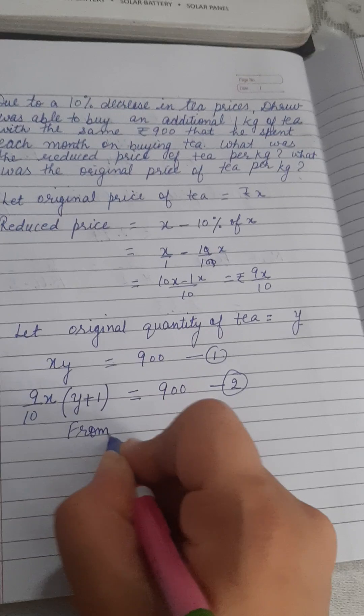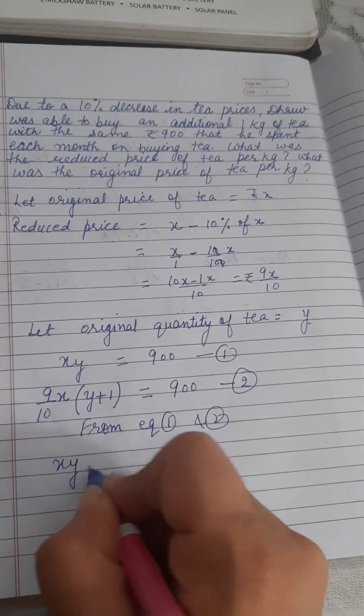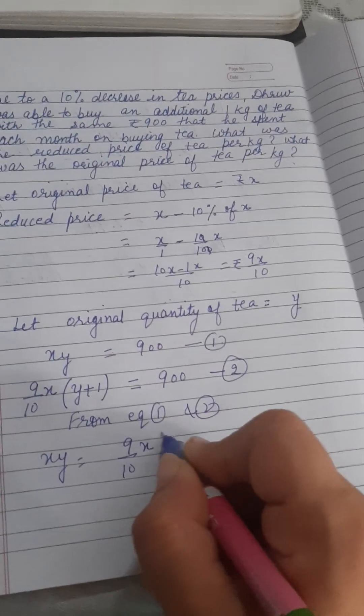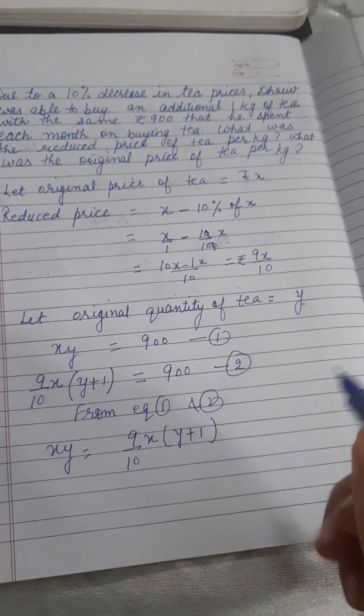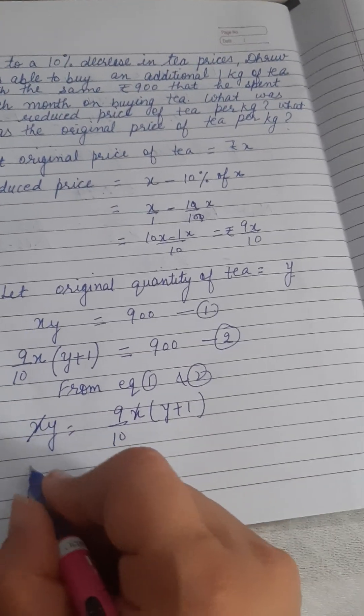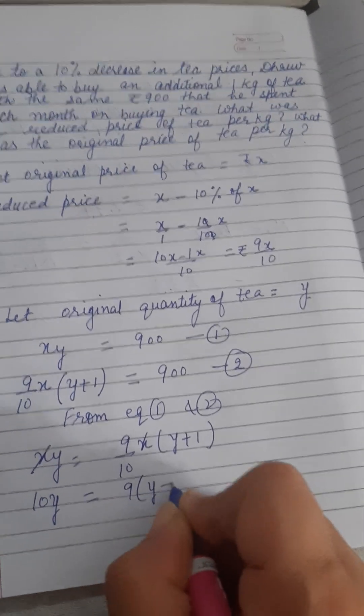Now from both the equations, right hand side is same. From equation 1 and 2 we get XY is equal to 9 by 10 X into Y plus 1. Right, now X is cancelled from both the sides. 10 is multiplied with Y, so 10Y is equal to 9 into Y plus 1.